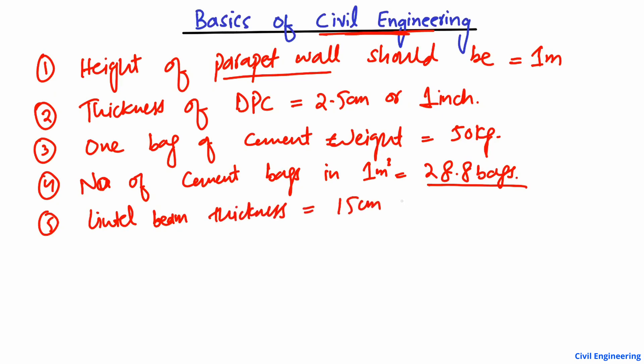The sixth point: minimum diameter of bars used in slab should be equal to 8 millimeter. The minimum diameter of bar in slab should be equal to 8 millimeter.